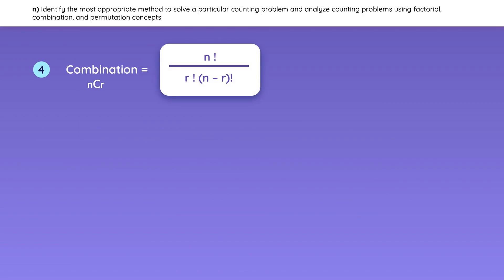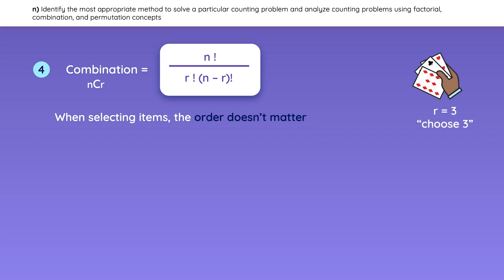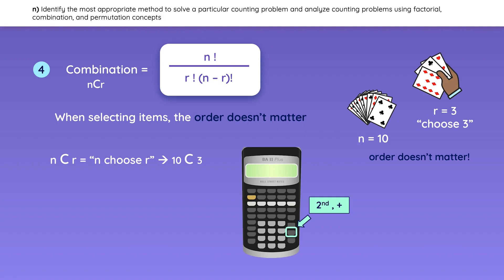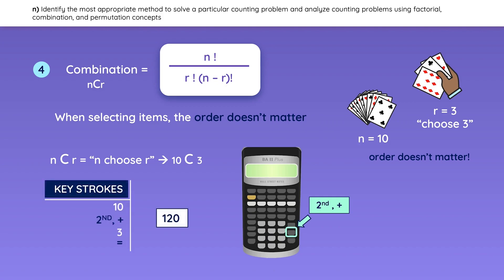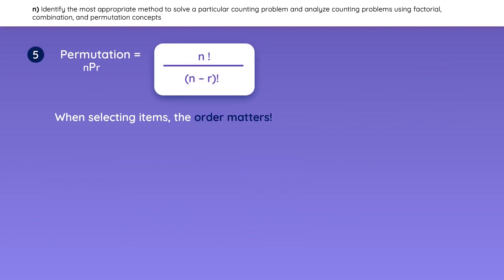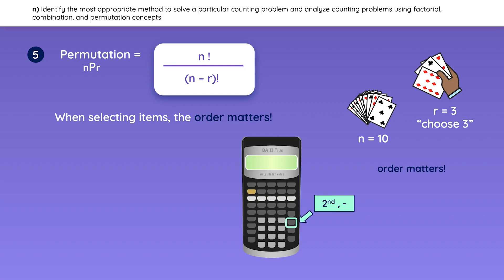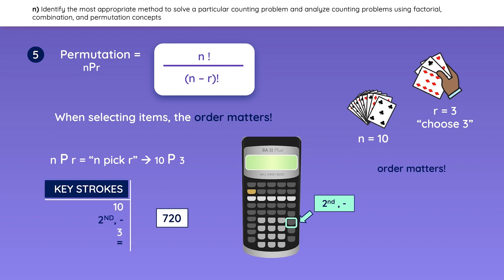For combinations, look out for the word 'choose' or 'combination' — remember that order does not matter. For example, in how many ways can you choose three cards from a set of 10 if the order does not matter? The notation means you have 10 cards and must choose three. You can use your calculator to save time. For permutations, the order in which you select things is important — in how many ways can you select three cards from a group of 10 when order matters? Use the permutation button in the calculator, with notation meaning 10 cards, pick three.